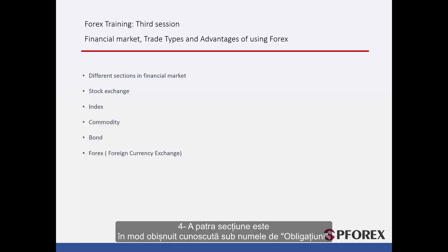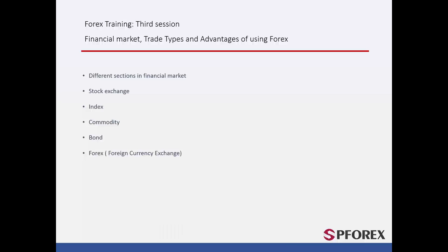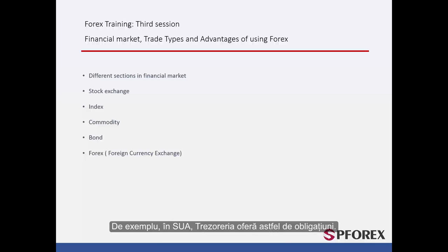The fourth section is commonly known as bonds. Government bonds and non-governmental shares, with or without fixed-rate security, are easy to purchase. For example, in the USA, the Department of Treasury offers such bonds.